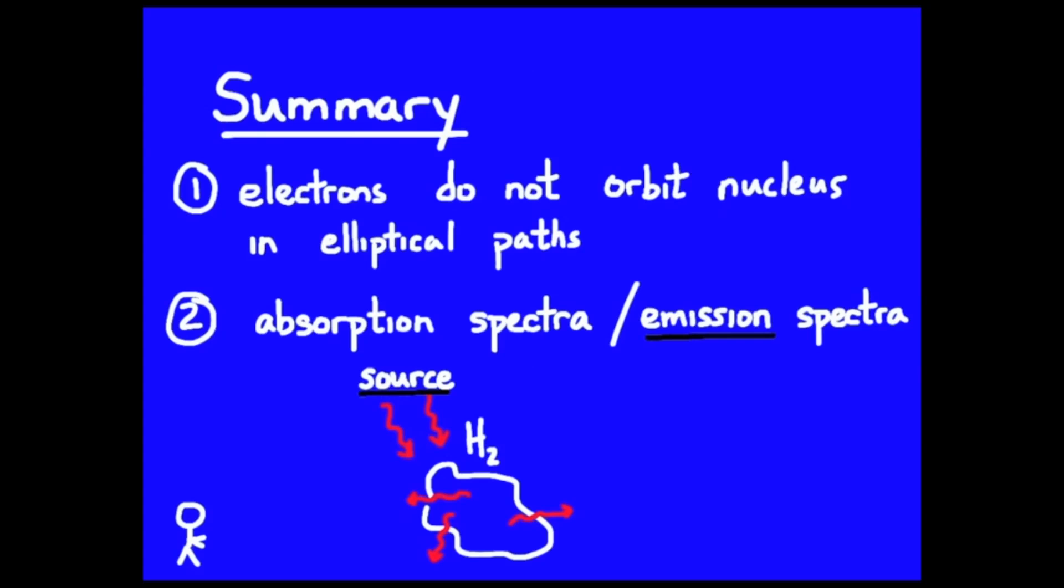In this case, the source is off to the side, not in your direct line of sight for the observer. You have what's called an emission spectrum. It's characteristic of the gas.